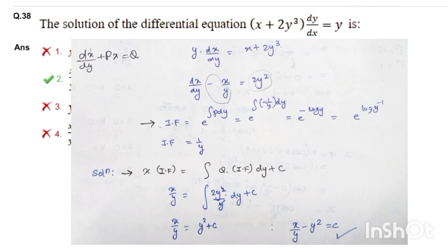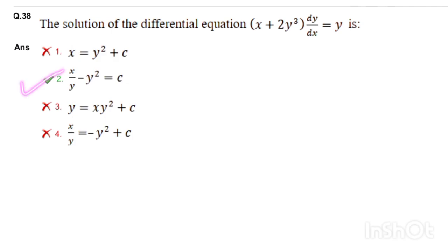And the solution will be x times integrating factor equals integral q times if dy plus c. So x/y = y² + c. Therefore the option is x/y - y² = c.